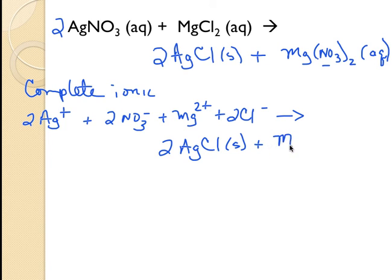Then, the magnesium nitrate is soluble, so I would show that like this. Now, if we look at this, there are a couple ions that don't participate in the reaction. This nitrate ion and the magnesium ion exist in the same phase and state in the products as they do in the reactants. Those are called spectators.